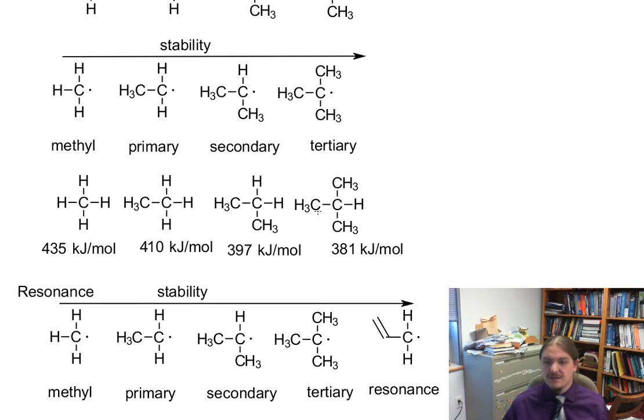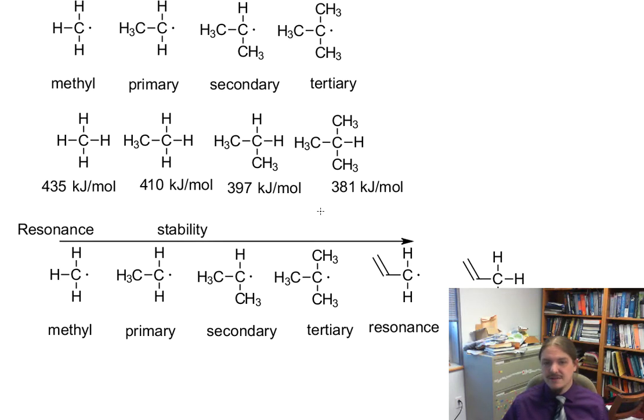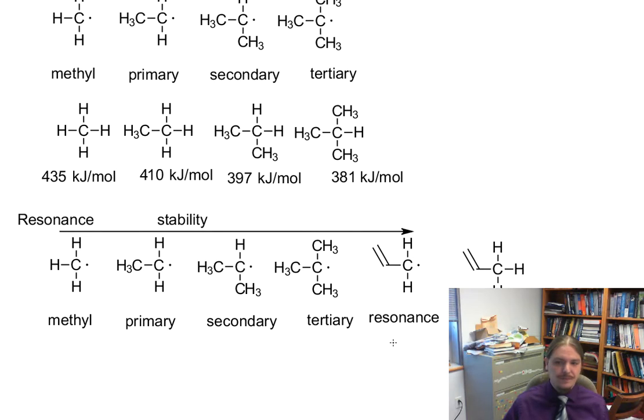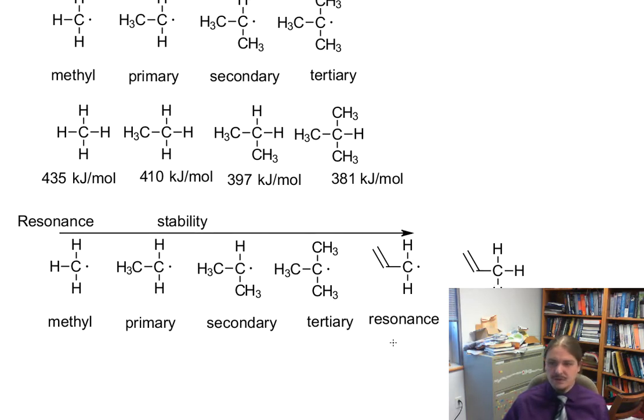In addition, just like carbocations, radicals are stabilized by resonance. And resonant stabilized radicals are even more stable than tertiary radicals. The carbon hydrogen bond in one propene that would make the resonance stabilized allyl radical only requires 364 kilojoules per mole to break that bond.